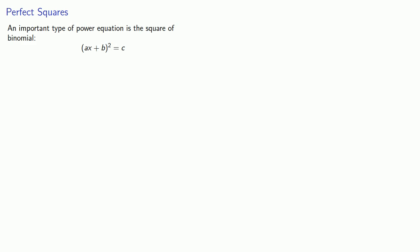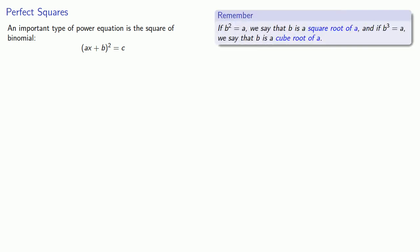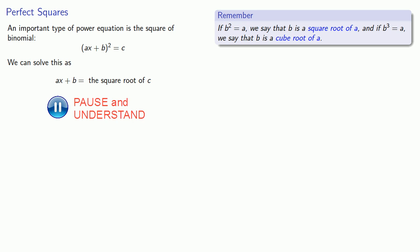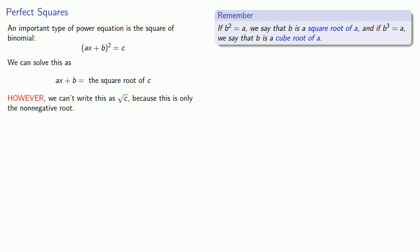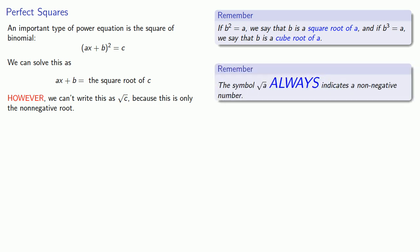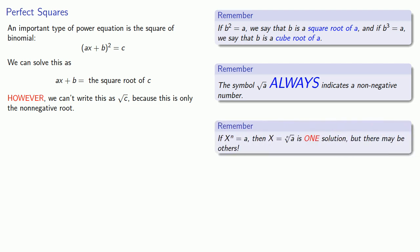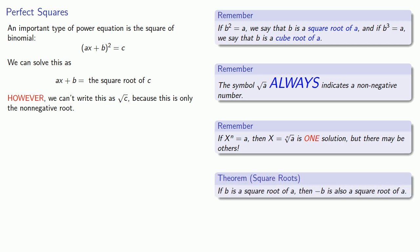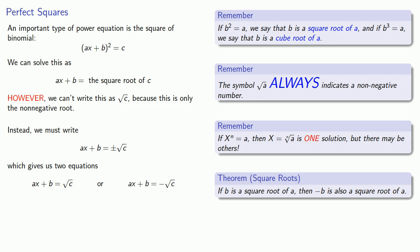Let's focus on an important type of power equation: the square of a binomial, ax plus b, quantity squared, equals c. We have something squared equals c, so our something must be a square root of c. However, we can't write just the principal square root of c, since that's only the non-negative root. We must write ax plus b equals plus or minus the principal square root of c. This gives two equations: ax plus b equals the principal square root of c, or ax plus b equals negative the principal square root of c.